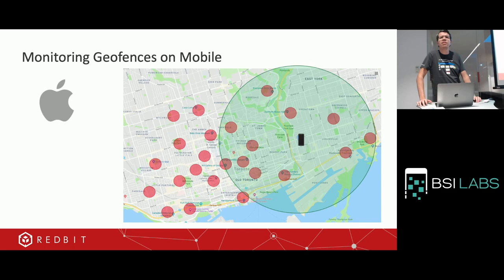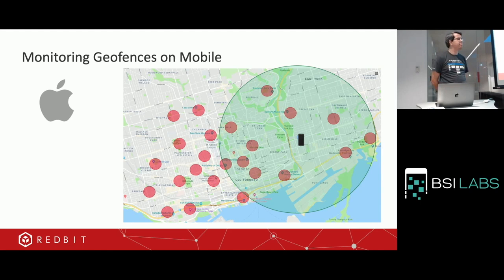I think you're asking whether the native API, without going to a geocoding service, could let you say: hey, create a geofence for Toronto, and it actually creates it around the city's border.